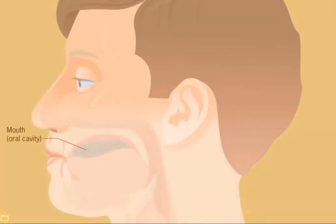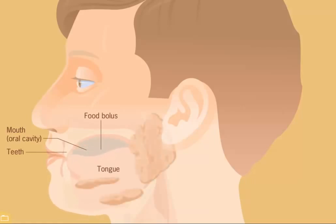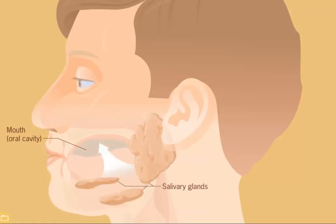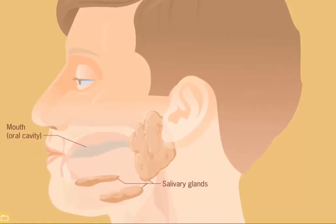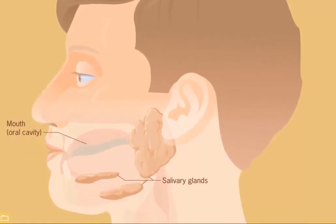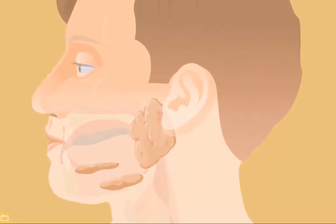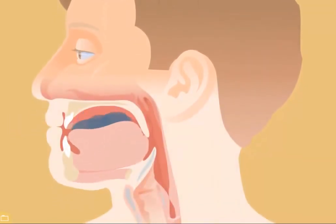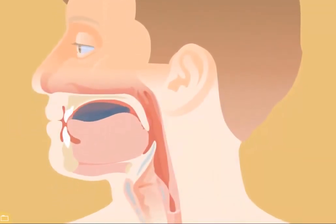Digestion starts in the mouth, also known as the oral cavity, where mastication occurs. This is the process of chewing and mechanically breaking down the food bolus. Chemical digestion starts when the salivary glands release saliva into the oral cavity. Saliva is rich in amylase, an enzyme that breaks down carbohydrates. After the bolus has been broken down adequately, swallowing begins.